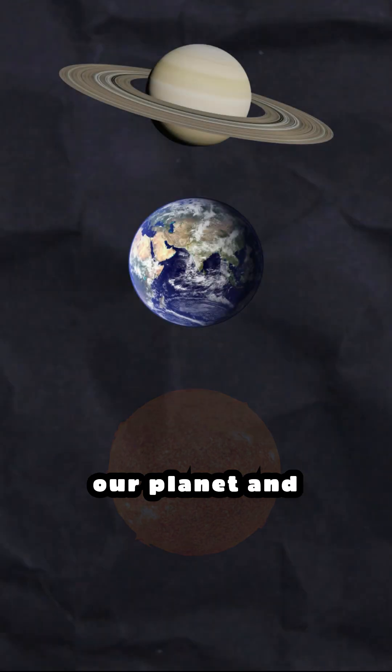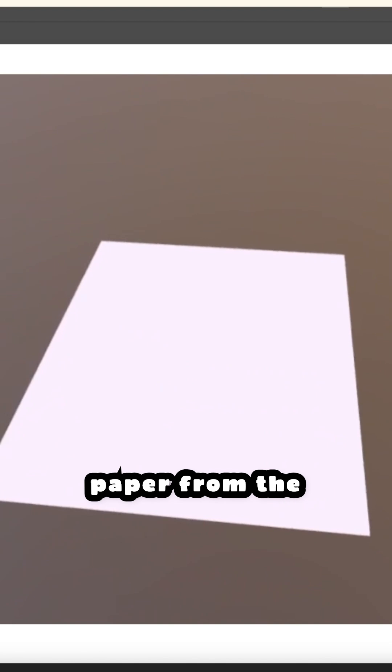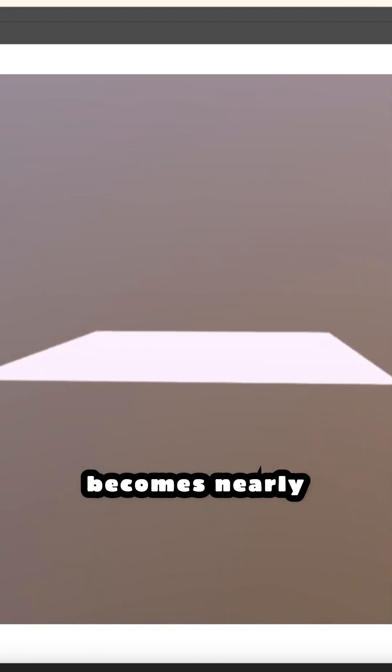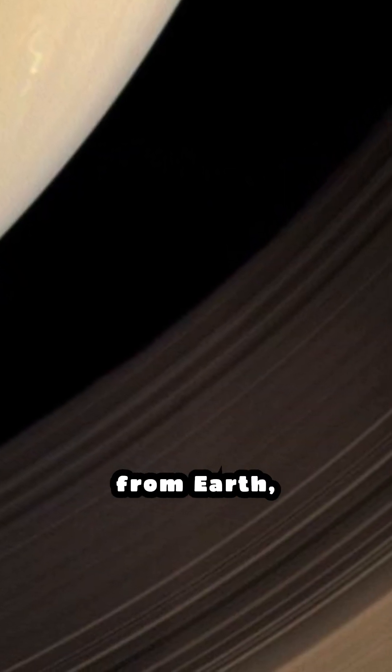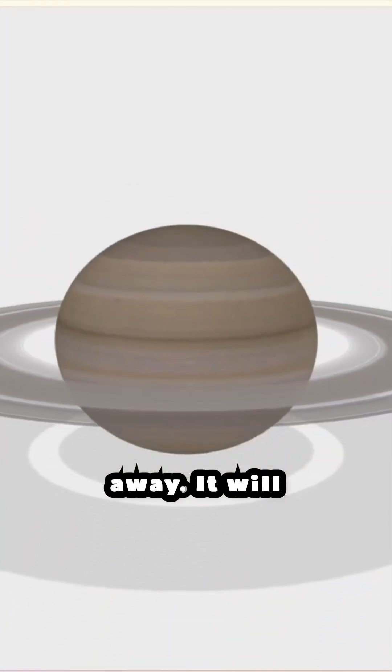Saturn's rings, our planet and the Sun will align perfectly in a straight line. When we look at a piece of paper from the side, it becomes nearly invisible. So imagine looking at Saturn's rings during equinox from Earth which is 1.47 billion km away.